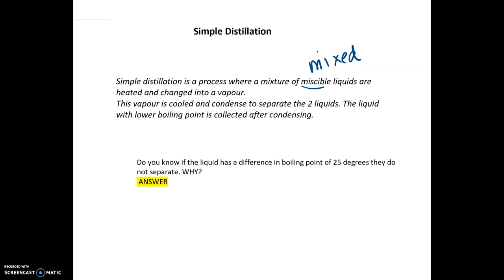Do you know if the liquid has a difference in boiling point of 25 degrees between the two liquids that you're trying to separate, why do they not separate? The answer is because there isn't much in terms of temperature differences between the two liquids so they're really hard to separate.